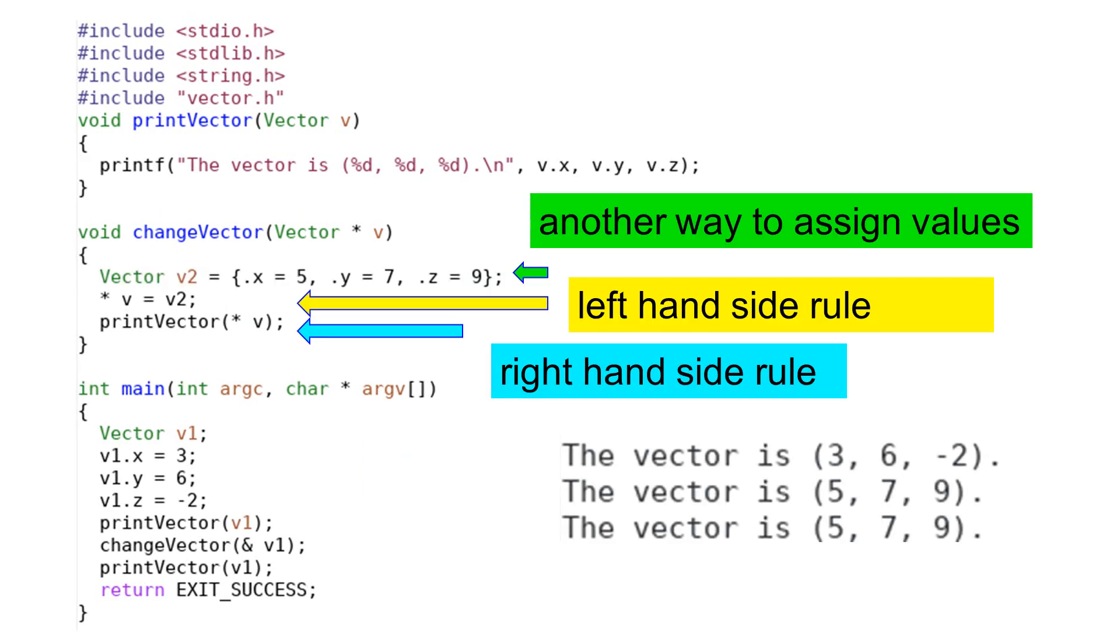This slide shows another way to initialize the attributes. V2 is a local object. The attributes can be assigned by using dot x, dot y, and dot z. We can use the left hand side rule of v. Asterisk v equals v2 will copy the values of v2's attributes to the memory pointed by v. The print vector function uses the right hand side rule of v. The attributes are read from the memory address pointed by v and copied to the argument v of print vector.